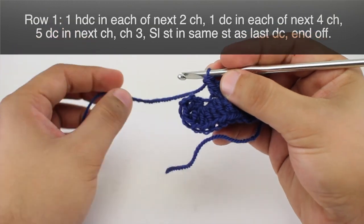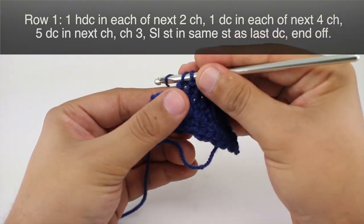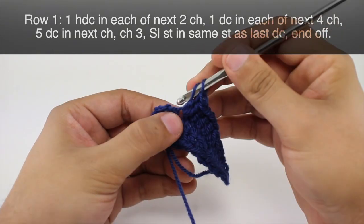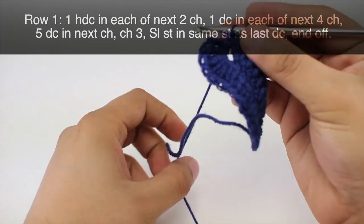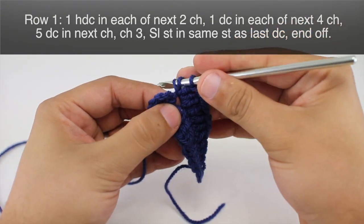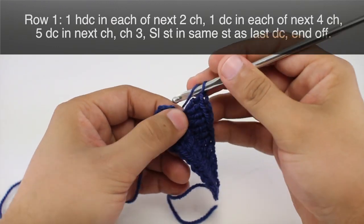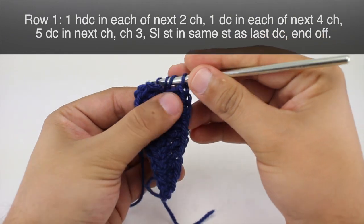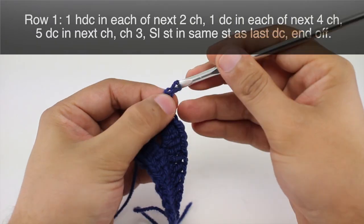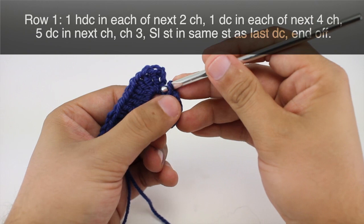And we'll finish up by doing five double crochets into the last chain here. So we've got one, two, three, four, and five. Then we're going to chain three. One, two, three. And we will slip stitch into the same stitch that we just did our double crochets into.